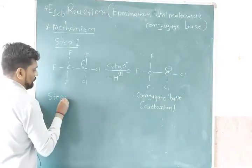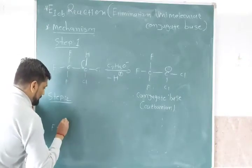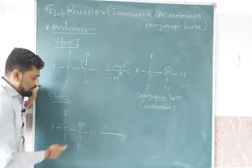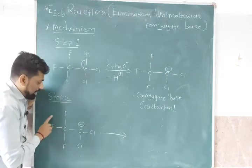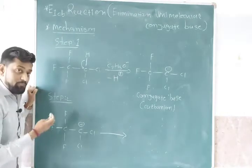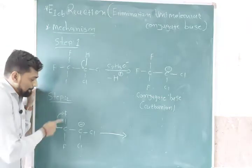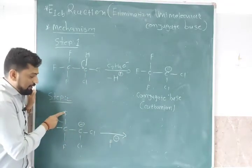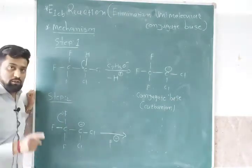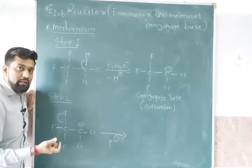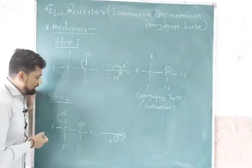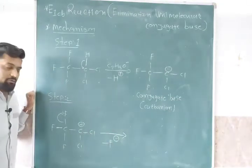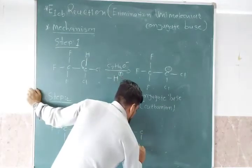In step two, the conjugate base (carbanion) is present with CF3, CCl2, and negative charge. Then F⁻ (fluoride ion) is removed. Fluorine is removed because fluorine is more electronegative compared to the carbon atom, so the electrons are taken away with the fluoride.